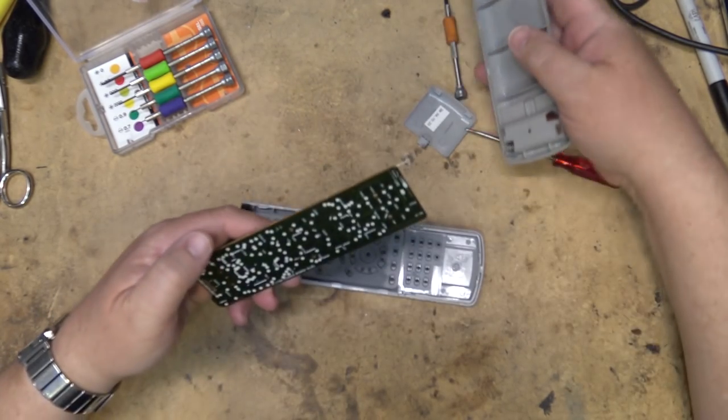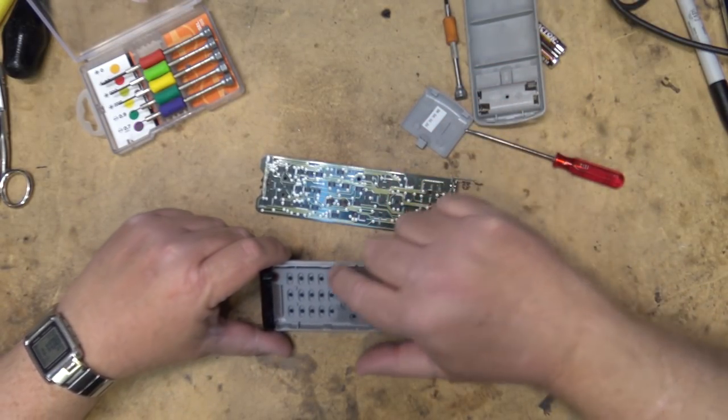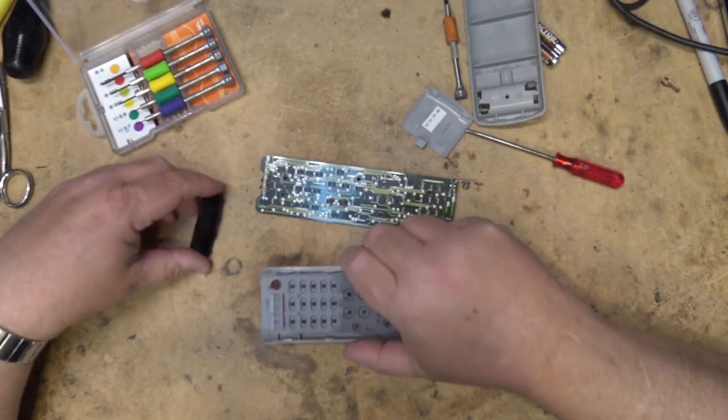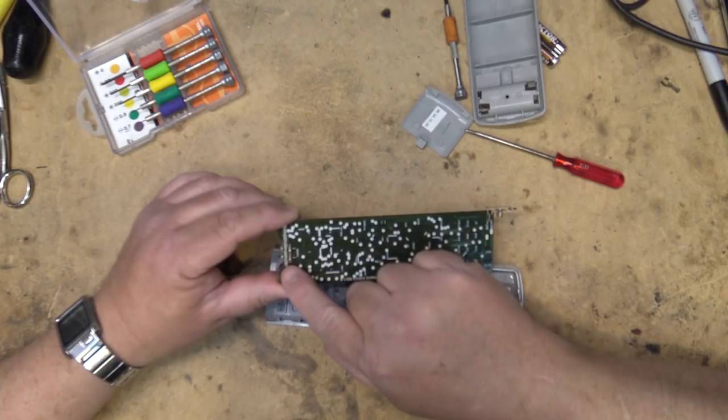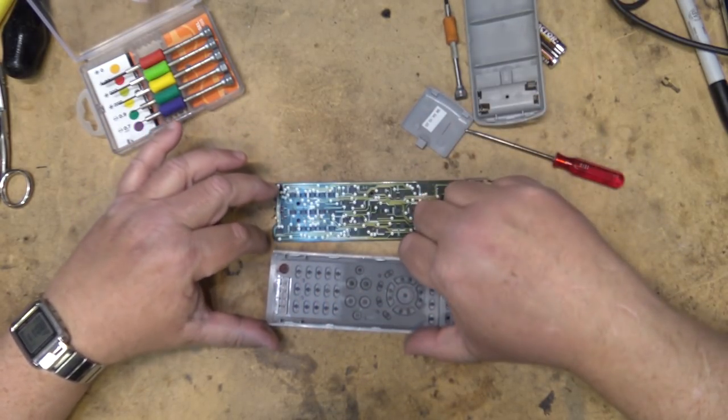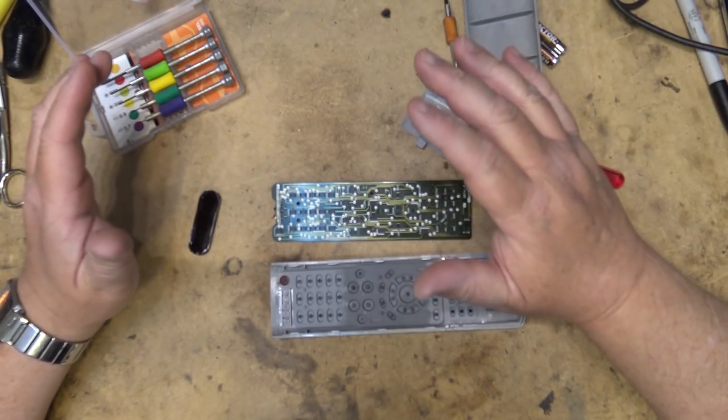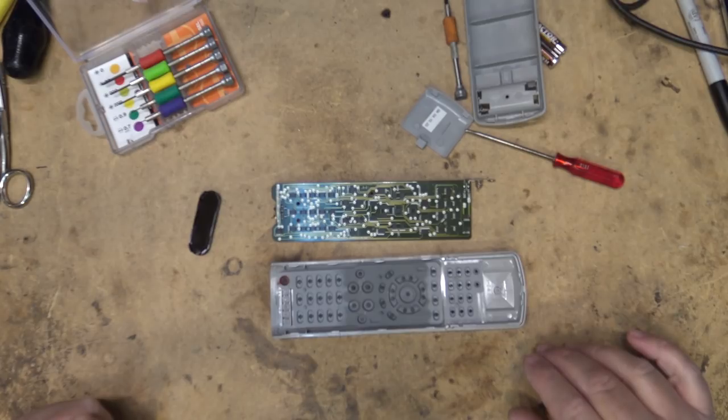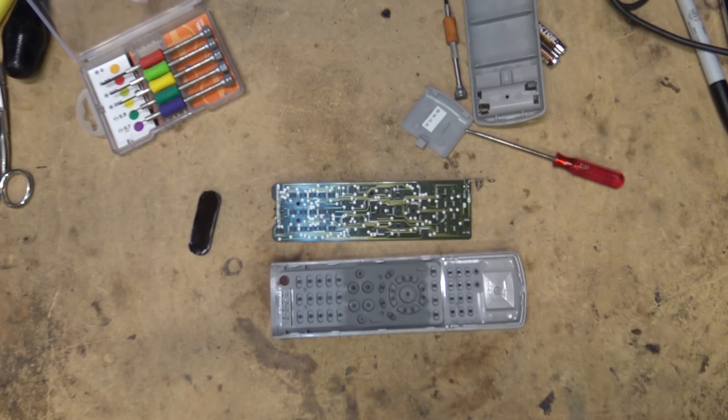The remote comes apart just like that, and what I'm interested in cleaning up is the rubber pads here. The rubber pads get contaminated, so do the little carbon spots on the board here. So we're just going to clean that off with some contact cleaner, a non-residue contact cleaner, and see if that will make the buttons work on this remote so that when I give the TV away I can give away the original remote with it.